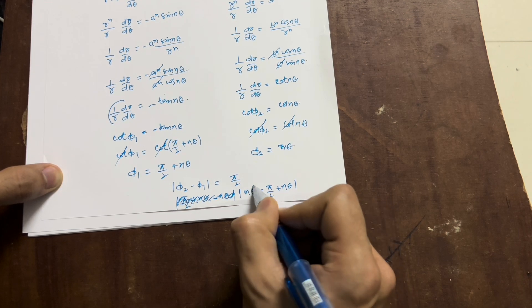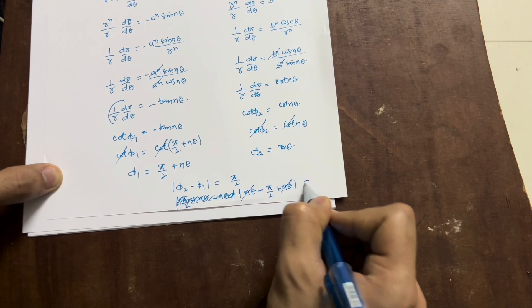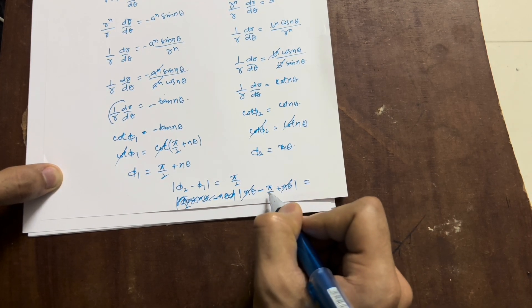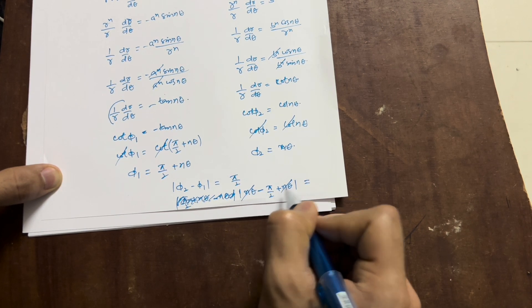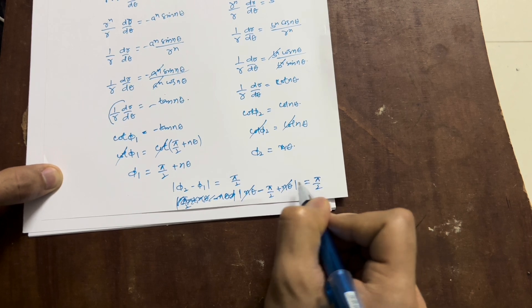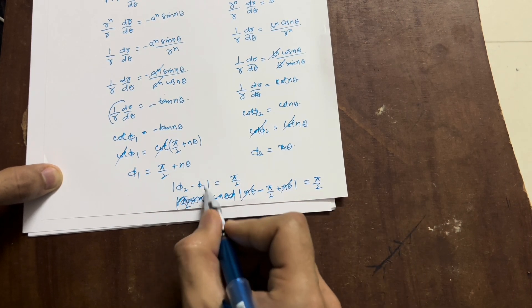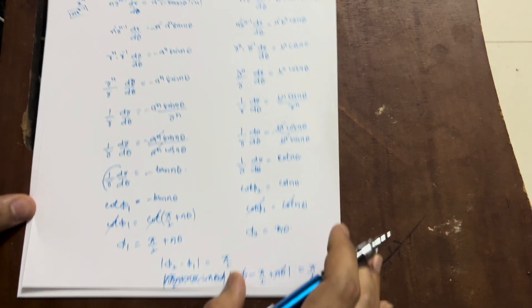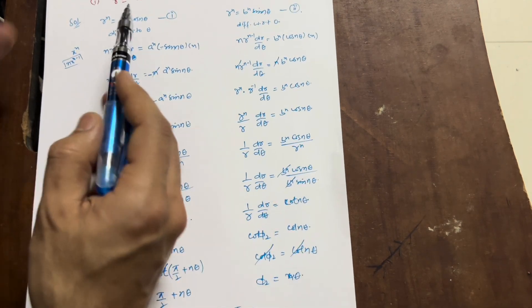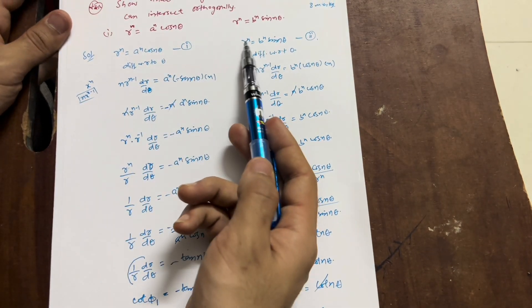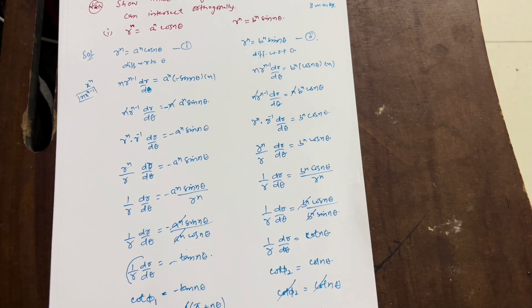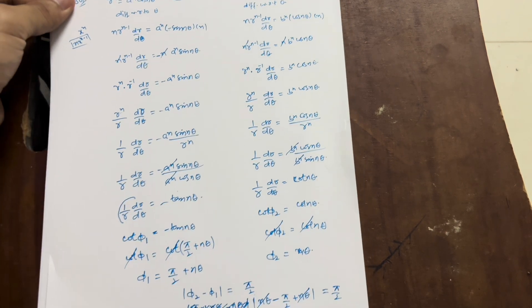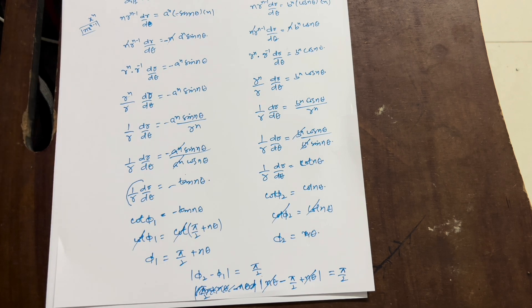Now checking the orthogonality condition: |φ₂ − φ₁| = |nθ − (π/2 + nθ)| = |−π/2| = π/2. Since the modulus of a negative value is positive, we get π/2. Therefore the given pair of curves r^n = a^n·cos(nθ) and r^n = b^n·sin(nθ) can intersect orthogonally. I hope you understood. Please share this video with your friends and batch mates. Thank you.